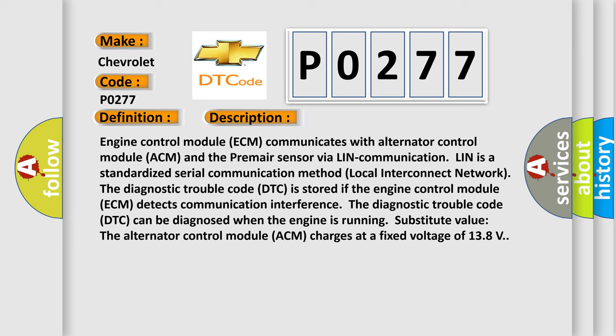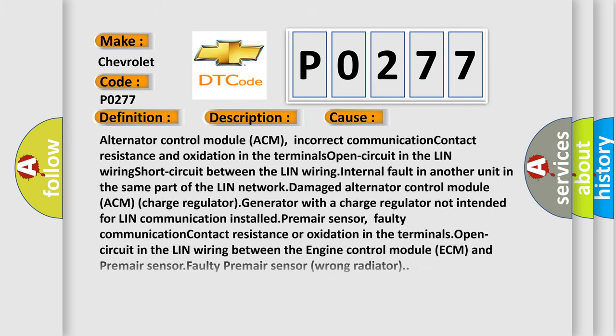LIN is a standardized serial communication method — Local Interconnect Network. The diagnostic trouble code DTC is stored if the engine control module ECM detects communication interference. When the engine is running with a substitute value, the alternator control module ACM charges at a fixed voltage of 13.8 volts. This diagnostic error occurs most often in these cases: incorrect communication contact resistance and oxidation in terminals, open circuit in LIN wiring, short circuit in LIN wiring, internal fault in another unit on the same LIN network, damaged alternator control module ACM, charge regulator not intended for LIN communication installed, faulty premier sensor communication, contact resistance or oxidation in terminals, or open circuit in LIN wiring between the ECM and premier sensor.